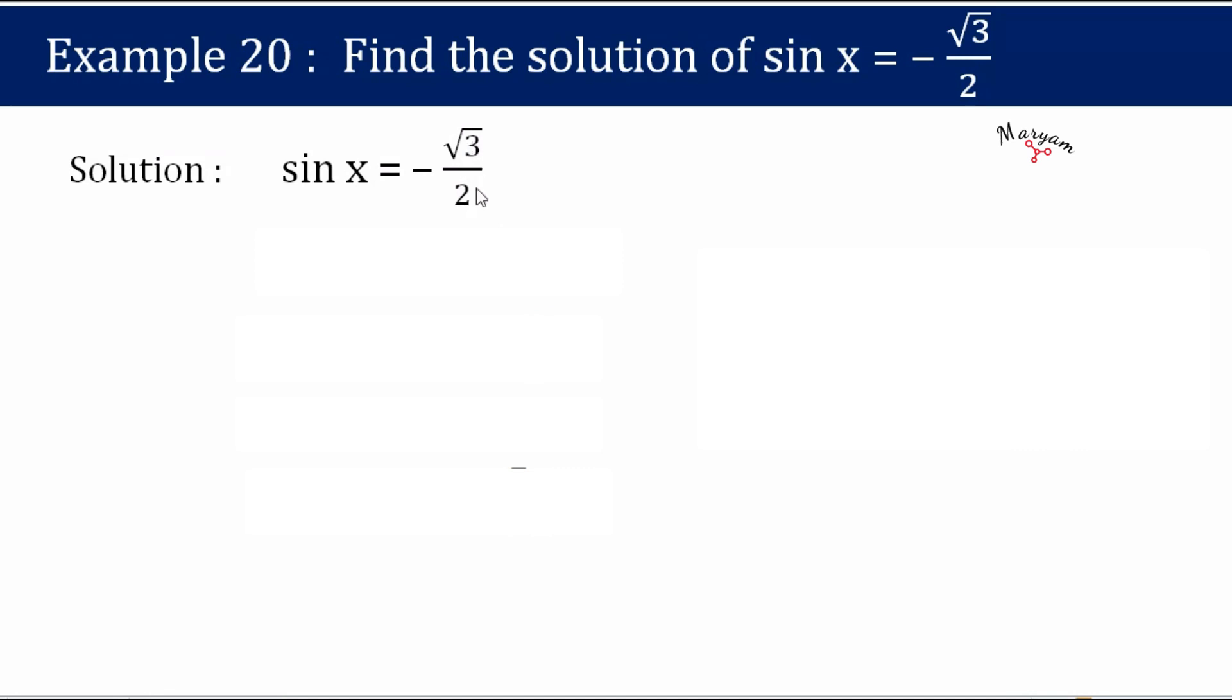So sin x equals minus root 3 by 2. We can also write it as sin x equals minus sin pi by 3, because root 3 by 2 is nothing but sin pi by 3.